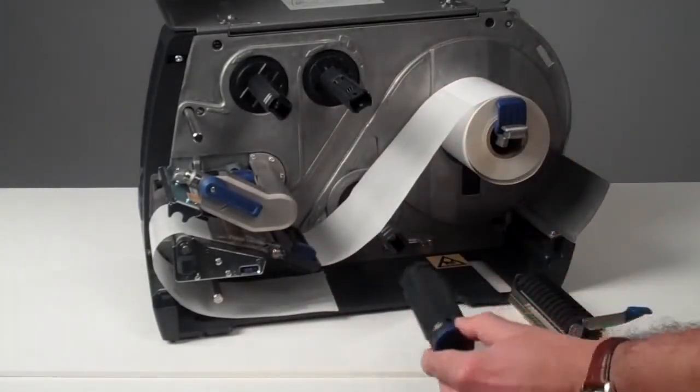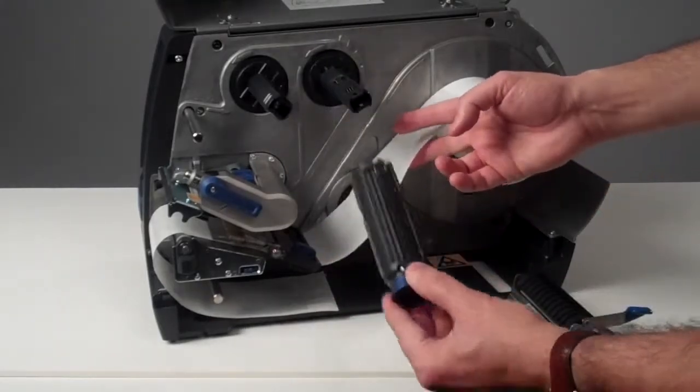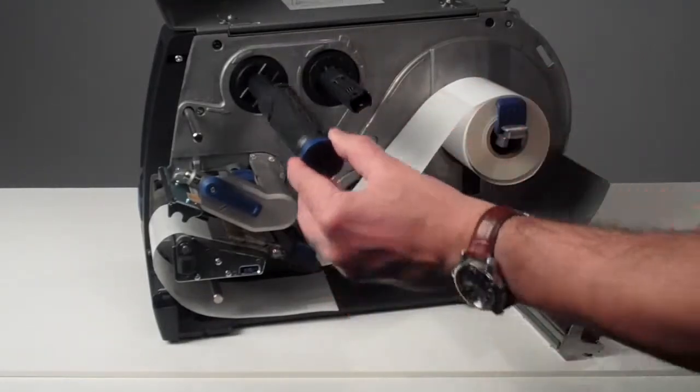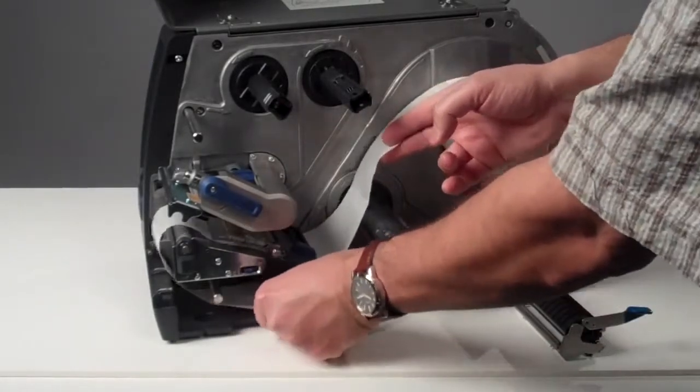The third way is to use the customer installable accessory collapsible core. The same collapsible core you can use for ribbon loading and for liner loading.